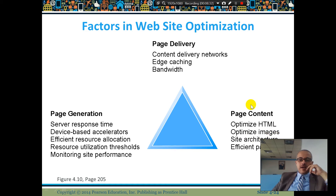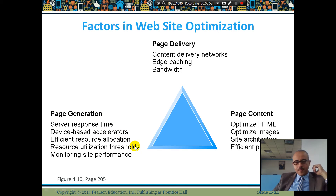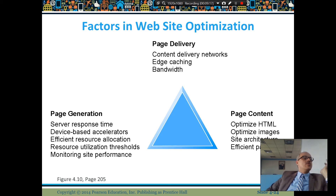Factors in website optimization: to optimize means to get the best performance. This includes best response time, best visual page generation, server response time, device-based accelerator efficiency, and resource allocation. Some websites require a lot of processing; others are optimized and don't. Some are very slow over the network, some very fast. You want your website to be optimized — very fast, not using a lot of resources or memory.